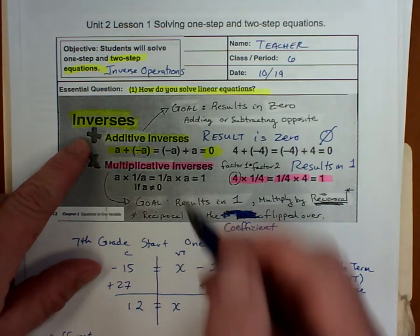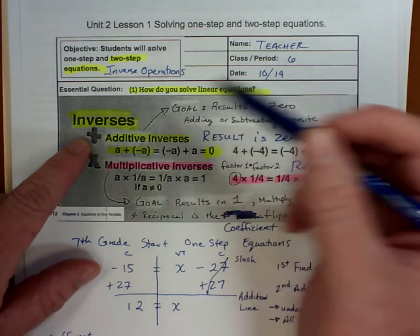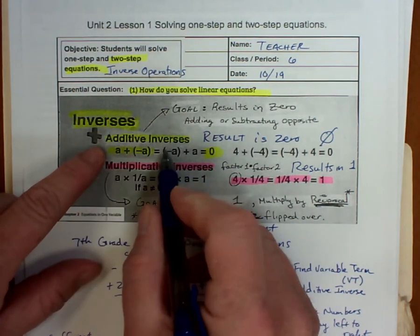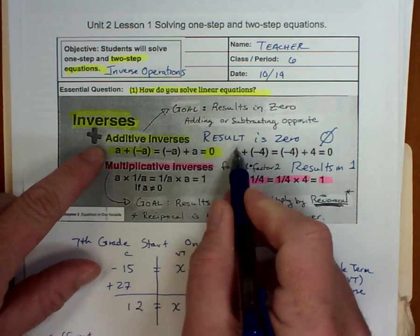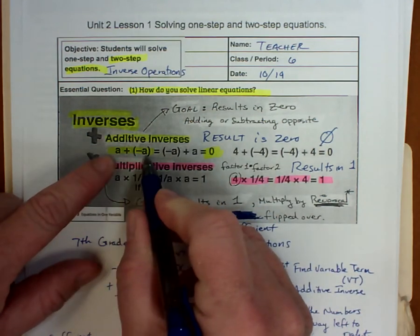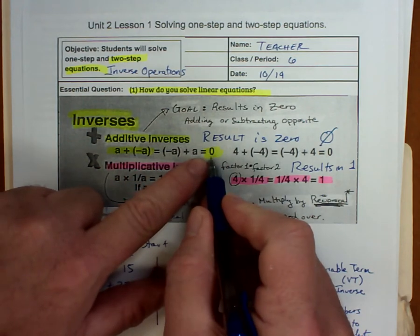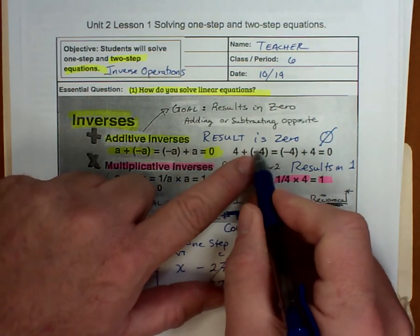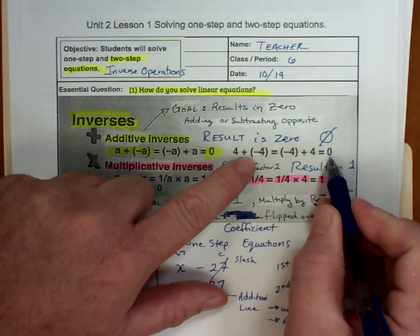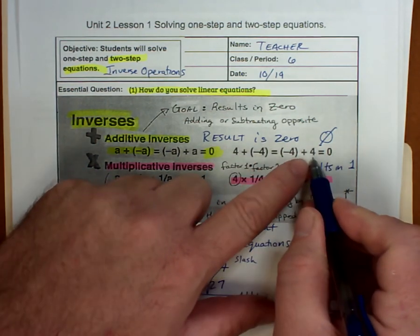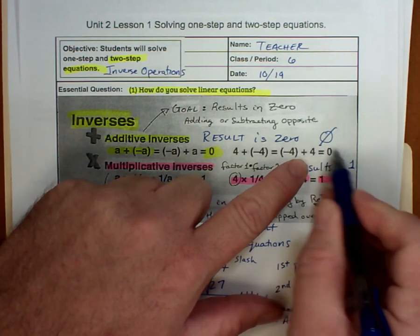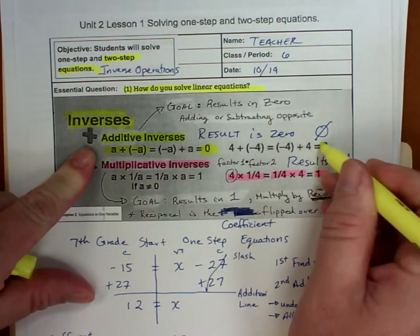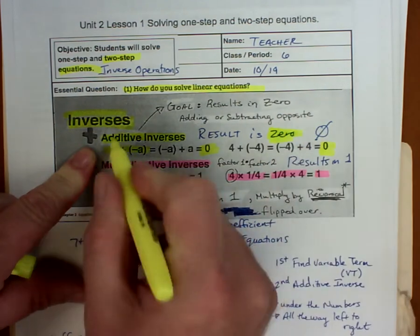On two-step equations, we have a variable term and a constant on one side of the equation. We have to get rid of the constant, and we do that by applying the additive inverse. The result of the additive inverse — a plus negative a, or negative a plus a — is zero. For example, if I had $4 and added minus $4, I'd end up with no money. Or if I owed my friend $4 and paid him $4, I'd have zero. The additive inverse results in zero.